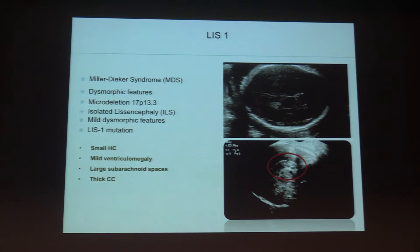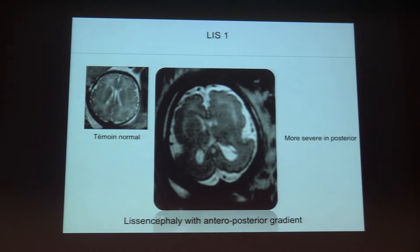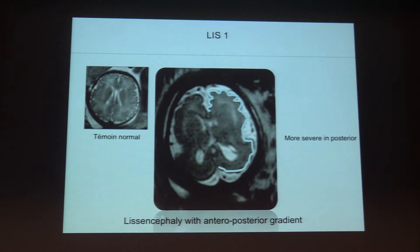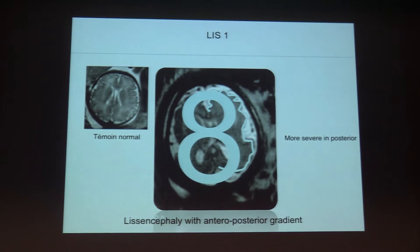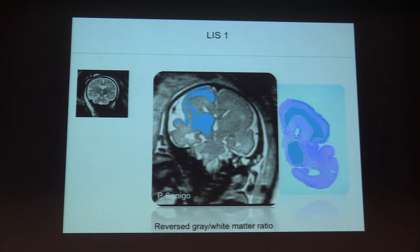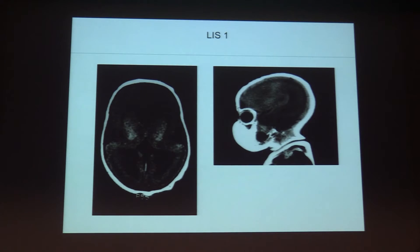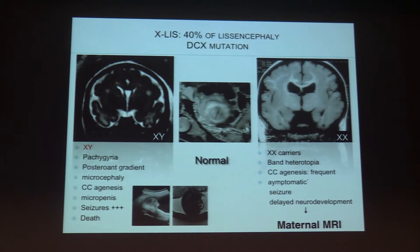LIS1 was the diagnosis for the little girl presented at the beginning of the talk, with a thick corpus callosum. With MRI you have this typical pattern of brain in an eight-shape — you can literally place an eight on this brain. What is important to recognize is the gradient: there is a more severe pattern in the posterior part of the brain with near-complete absence of sulci, while anteriorly you still have some normal sulci. Here is the coronal view with the typical lissencephaly appearance — agyria and pachygyria.